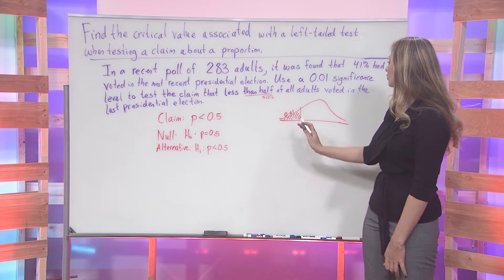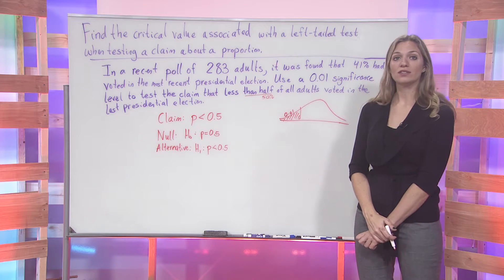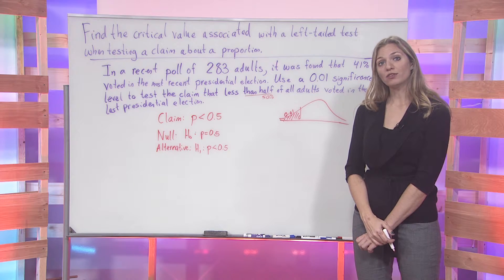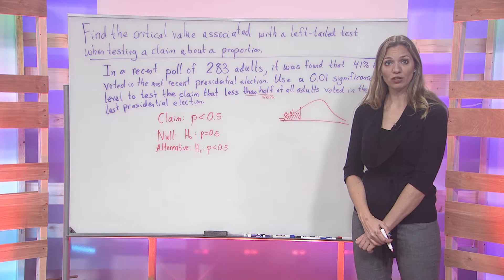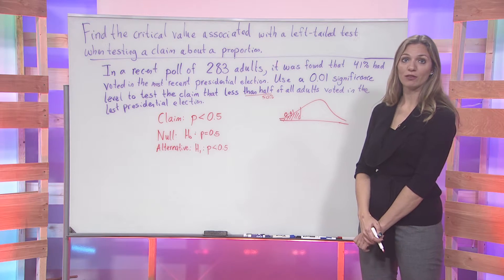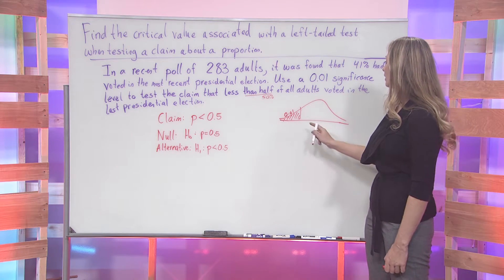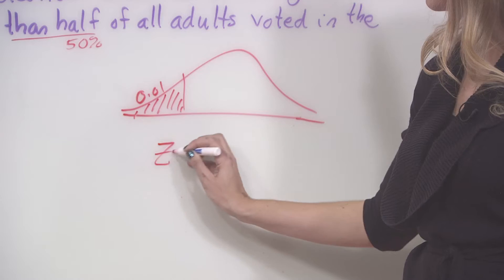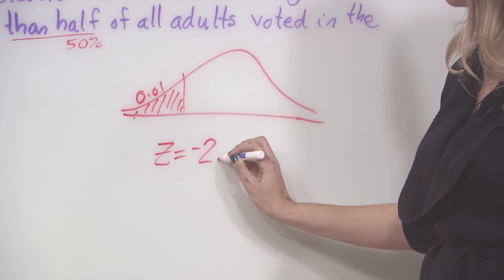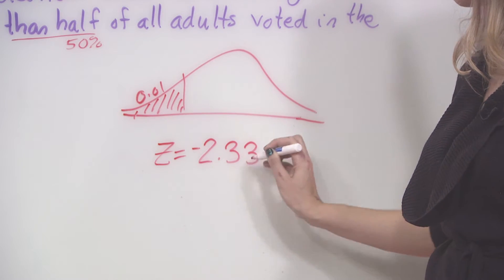Finding the area to the left here for the 0.01 has two options. We can either calculate the area straight from the chart or from the calculator itself. Coming from the chart, the area associated with 0.01 gives us a z-score of a negative 2.33.